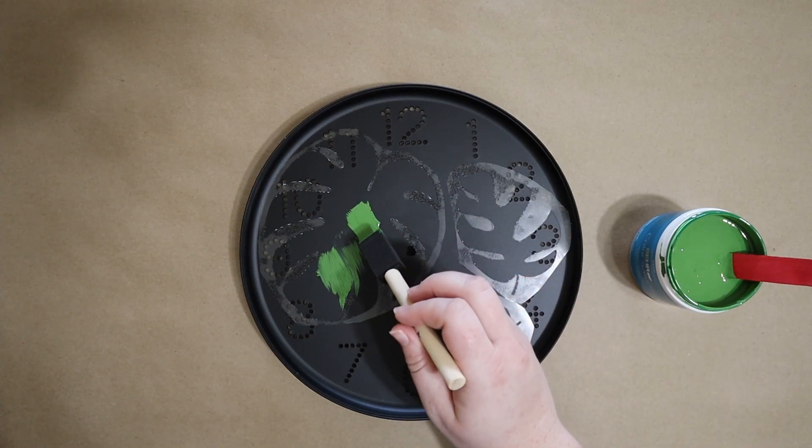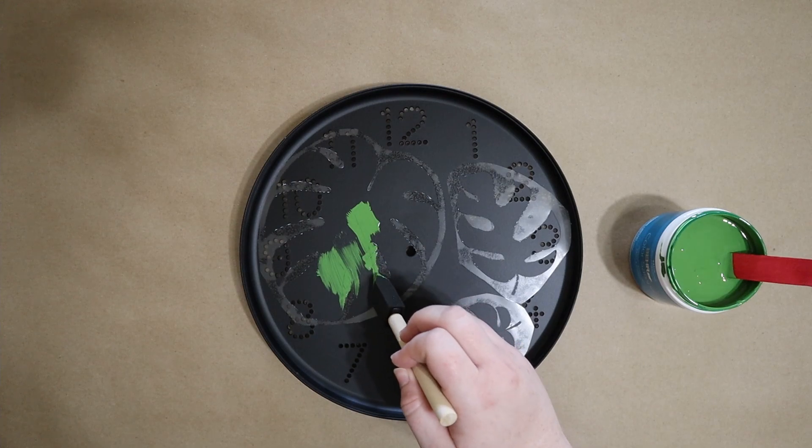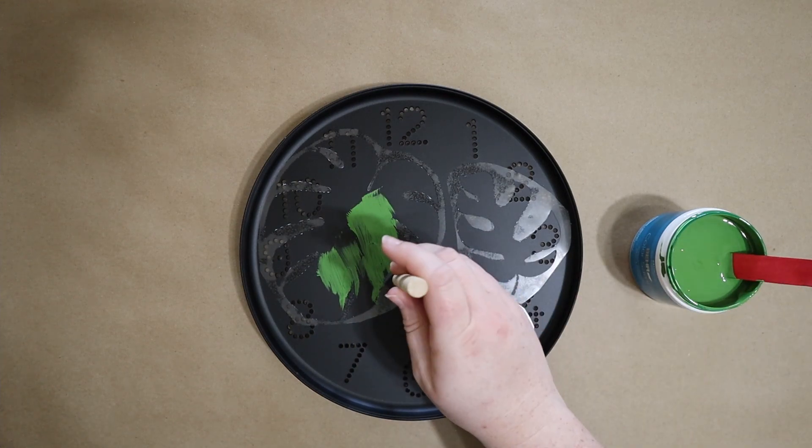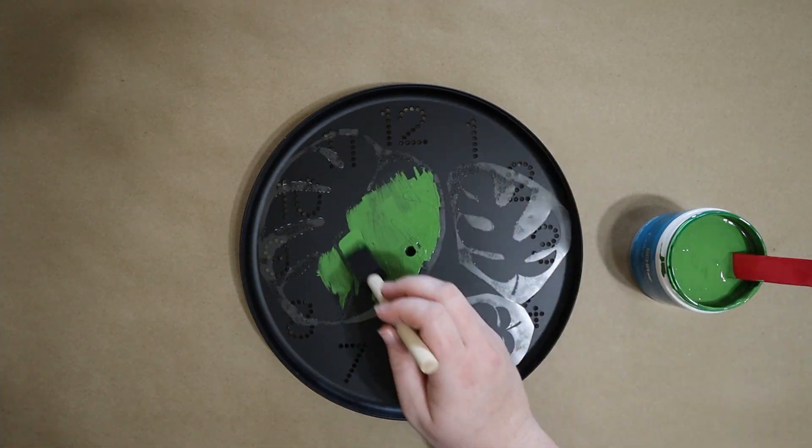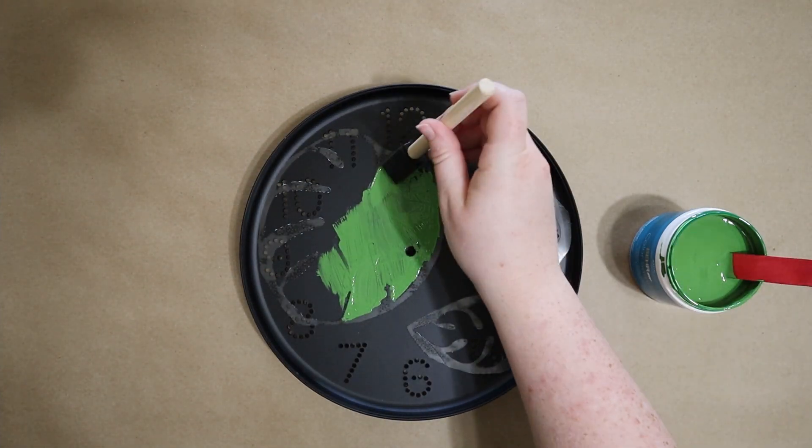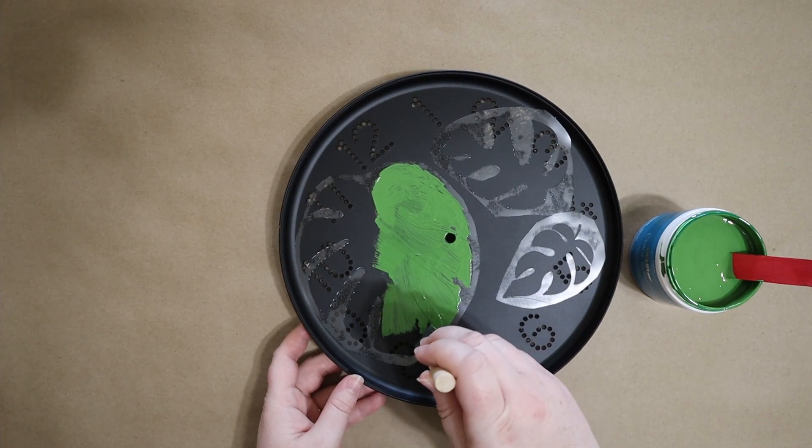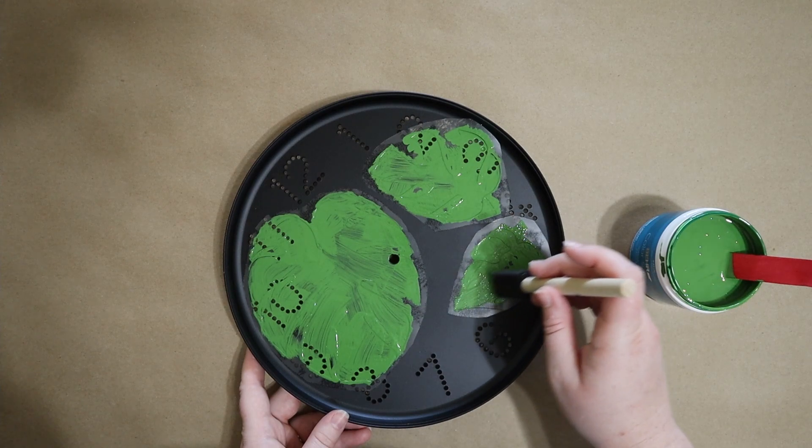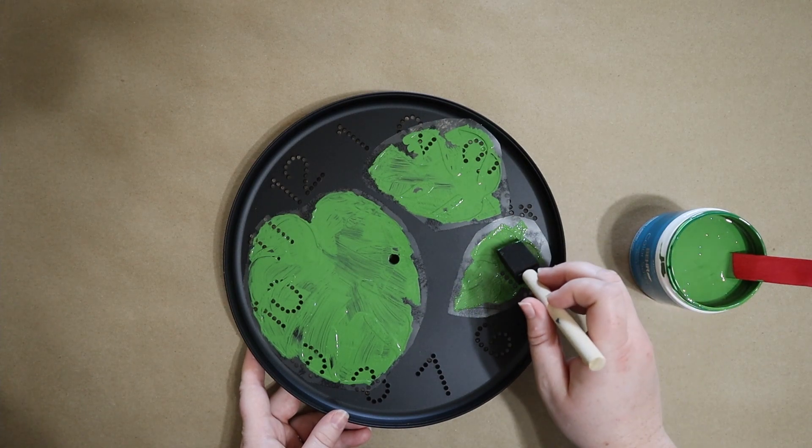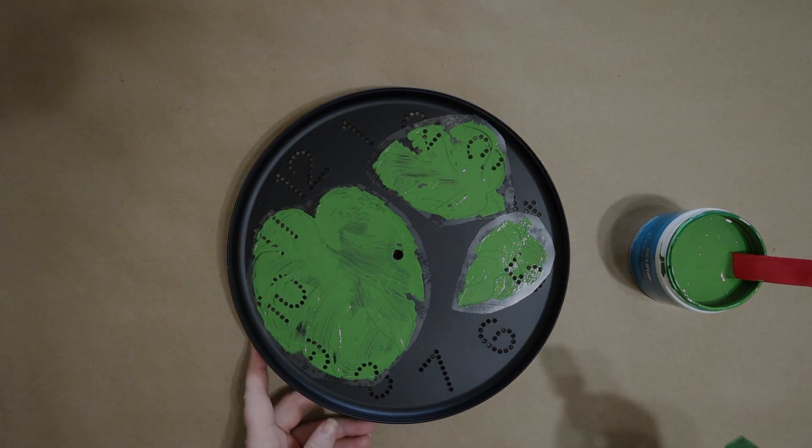As I paint I'm using a combination of long swiping strokes with some little stippling motions. You've got to be careful around the edges of the stencil because you really don't want it to bleed underneath. My end goal is to mimic the texture of real leaves. I'm going to do three complete layers, letting the paint dry between each one.